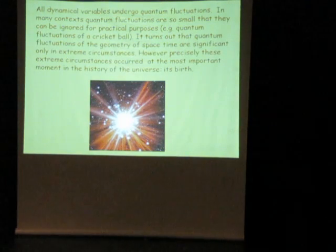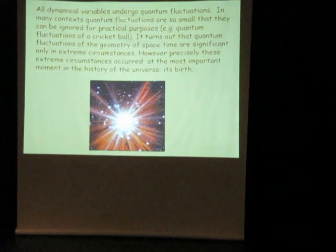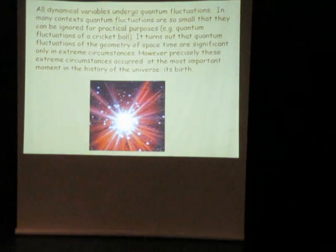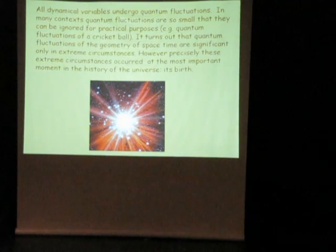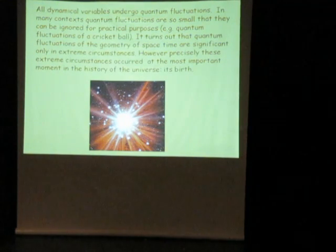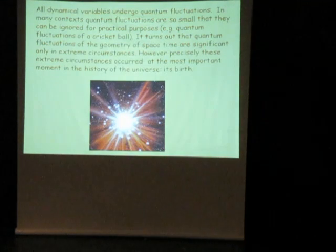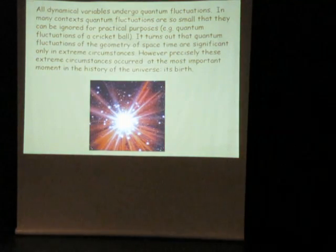There is no single dynamical variable in the universe — not the position, not the velocity, not the value of an electromagnetic field — nothing that could change dynamically is determined with certainty, except in very special states. Every dynamical variable undergoes quantum fluctuations; it doesn't have definite values, it has values of probability.